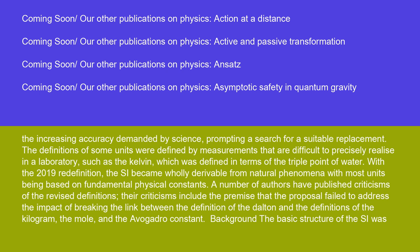The definitions of some units were defined by measurements that are difficult to precisely realize in a laboratory, such as the kelvin, which was defined in terms of the triple point of water. With the 2019 redefinition, the SI became wholly derivable from natural phenomena, with most units being based on fundamental physical constants.